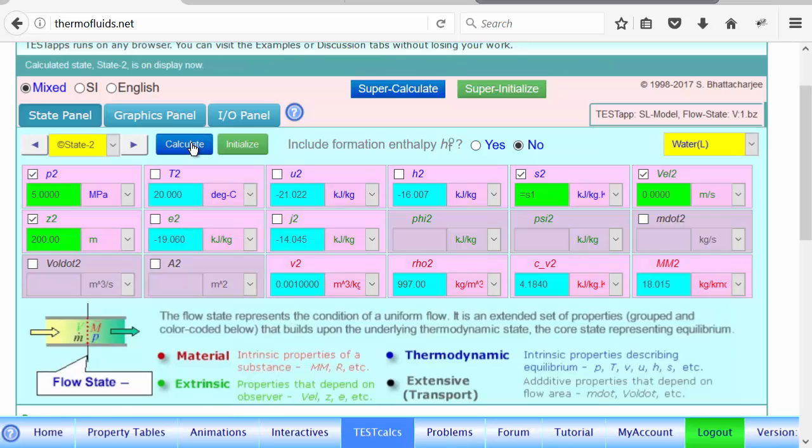We calculate the state. Therefore, all kinds of variables are found. Notice that the temperature T2 and T1 are equal. If entropies are equal, temperature doesn't change.